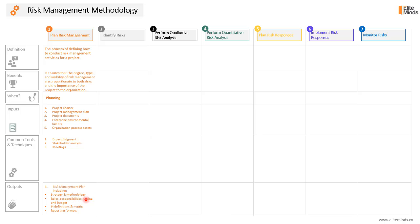The risk management plan includes the strategy and methodology we will be using for project risk management, roles, responsibilities, timing and budget of risk management activities, the probability and impact definitions, the probability and impact matrix, and reporting formats. These are the key sections of the risk management plan.